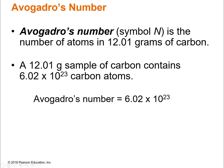Before we can talk about the mole, we have to talk about Avogadro's number, which is what the mole is based on. Avogadro's number is the number of atoms in 12.01 grams of carbon. Avogadro's number is pretty big — 6.02 times 10 to the 23rd. It's a lot of carbon atoms.